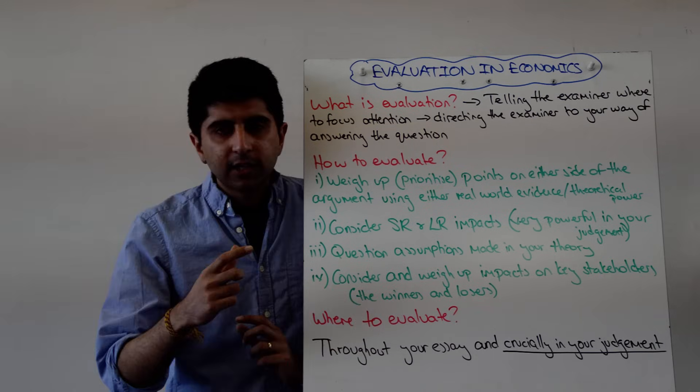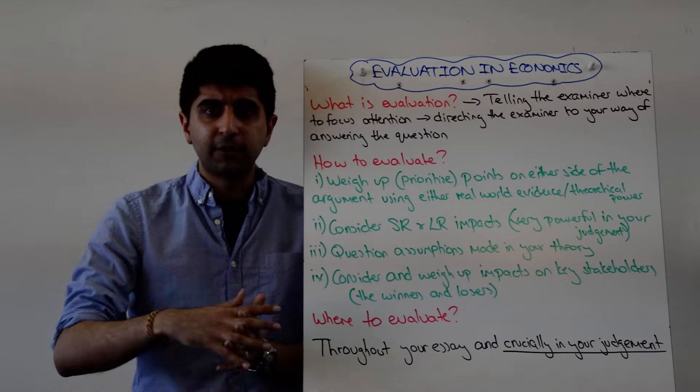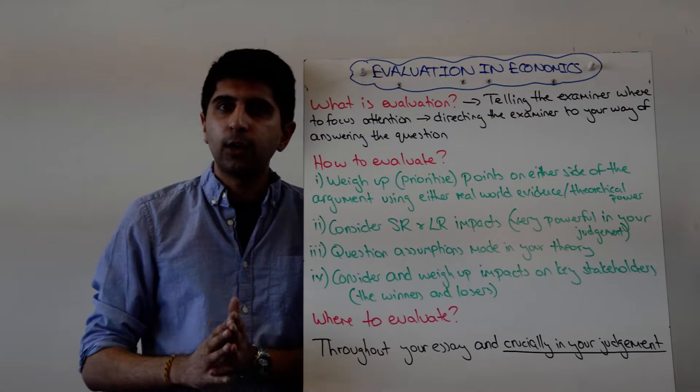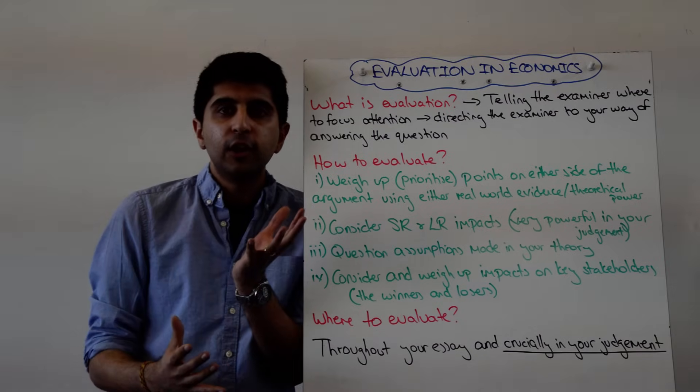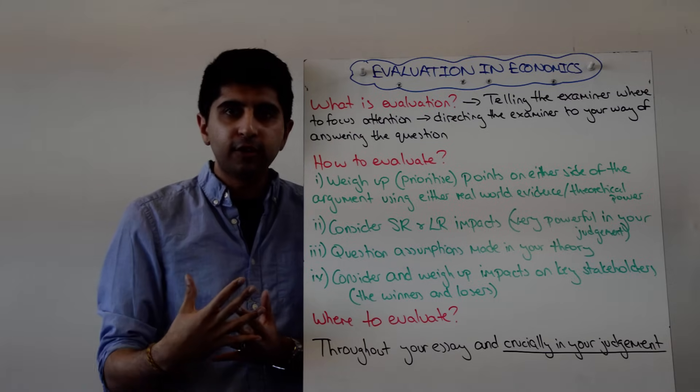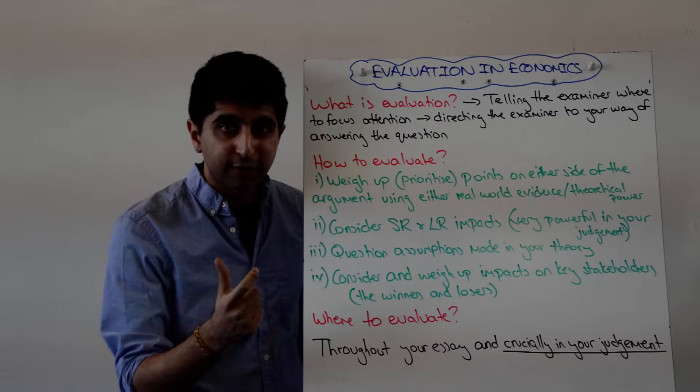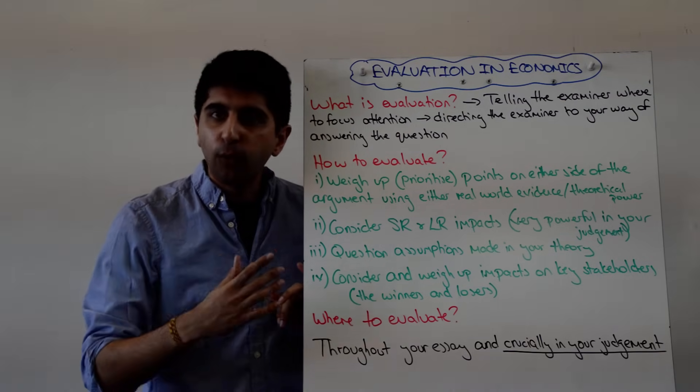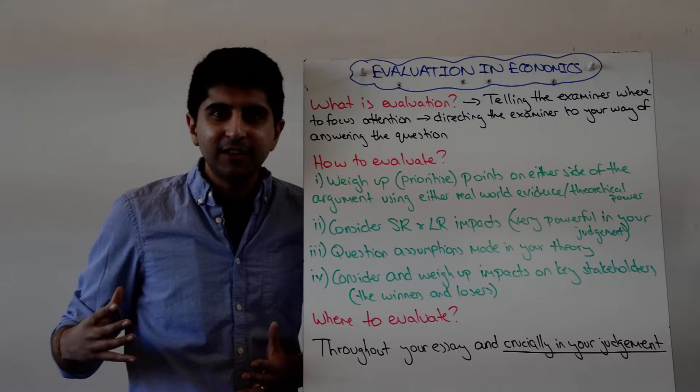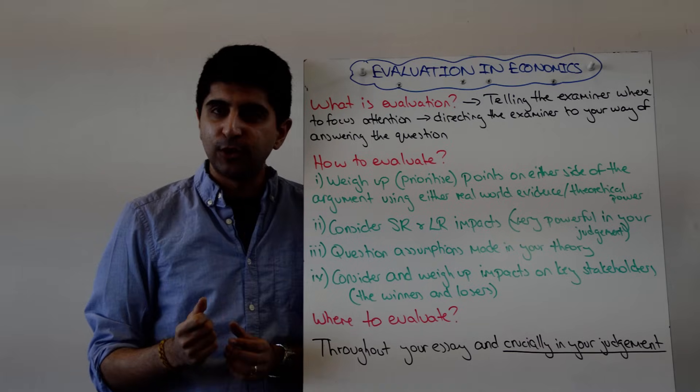And lastly, considering the winners and losers, considering who are the key stakeholders that are benefiting or losing out from something happening, whether it's a policy in your question, whether it's something else, whatever. If there is an impact on key stakeholders, make it clear, weigh up, who's going to lose out the most? Who's going to benefit the most? Is that significant? Is that a reason why a policy shouldn't go ahead? Is that a reason to consider alternatives? Very good evaluation right here as well, the winners and losers. So not all are going to be relevant all the time. You just have to know that this is your bank of evaluation tools. Depending on what the question is, you pick whichever evaluation points you think are relevant and explain them in depth and you are rocking your exam.